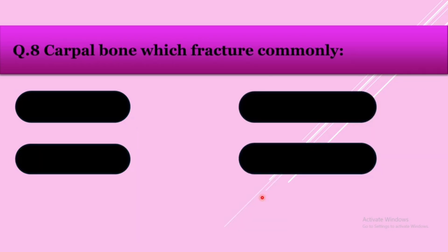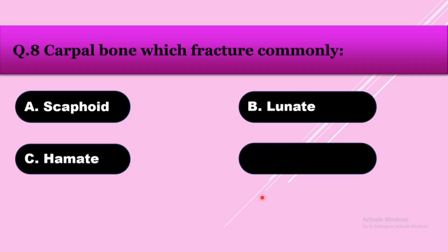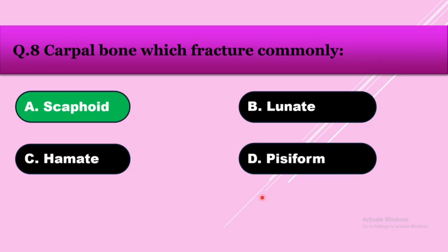Question number eight: Which carpal bone fractures most commonly? Option A: scaphoid, option B: lunate, option C: hamate, option D: pisiform. The answer is scaphoid. Scaphoid is the most commonly fractured carpal bone.